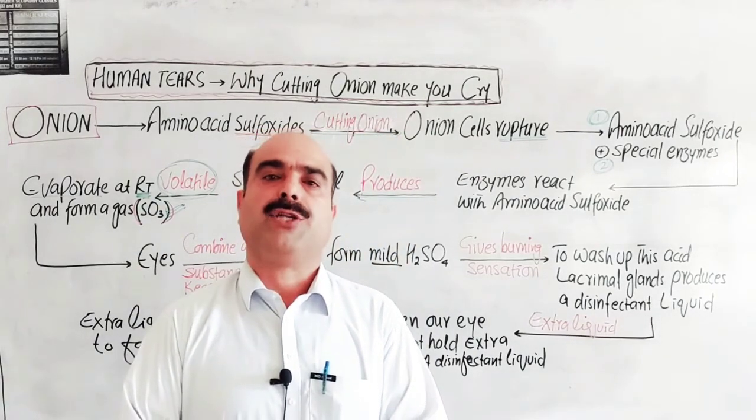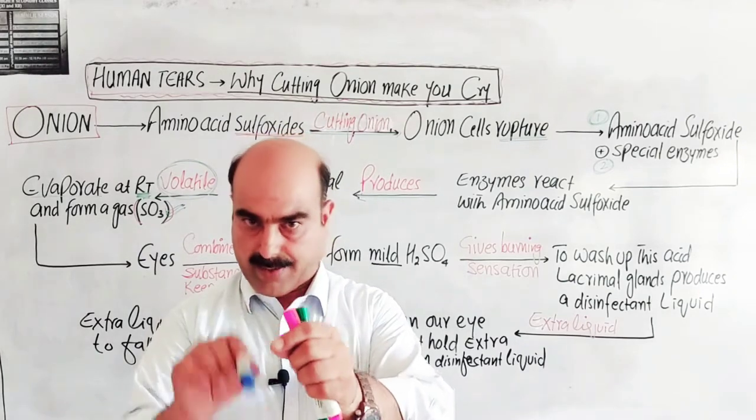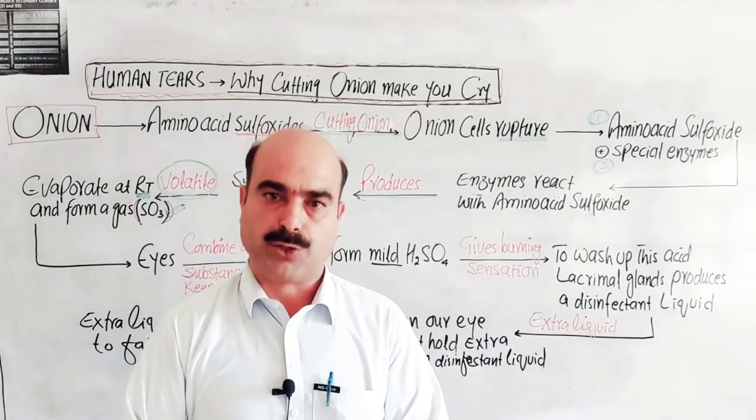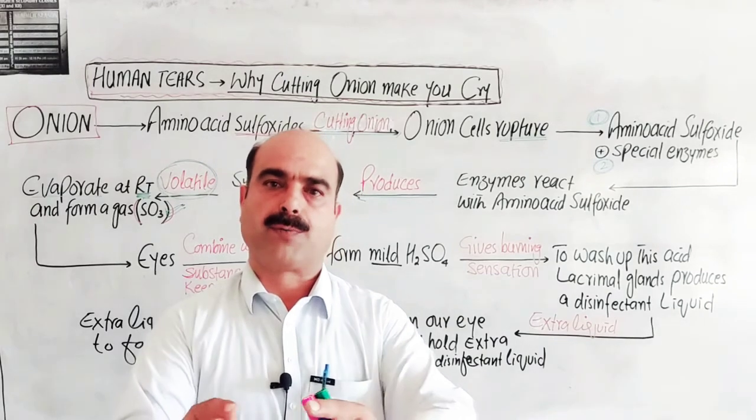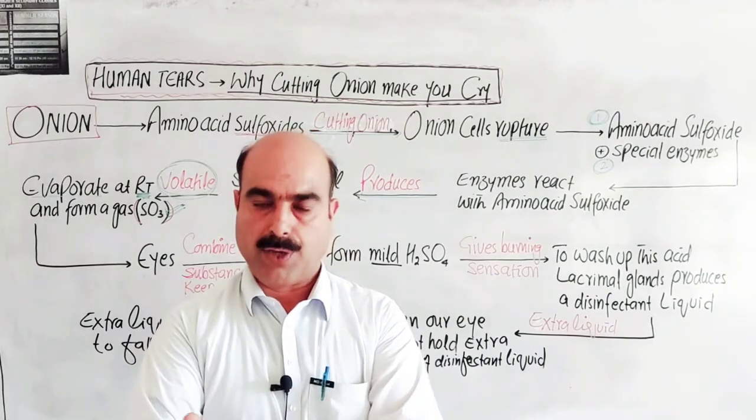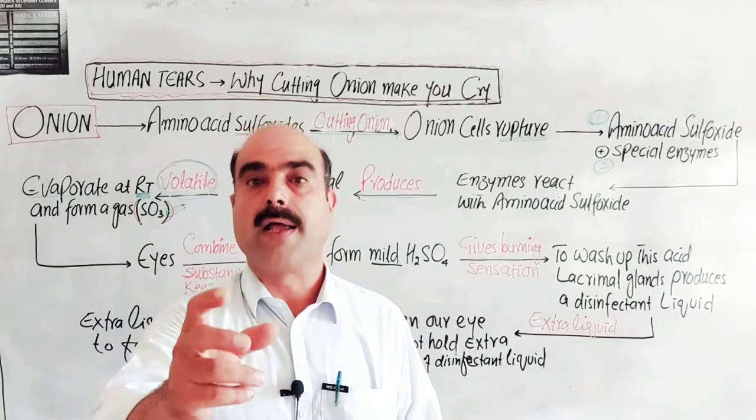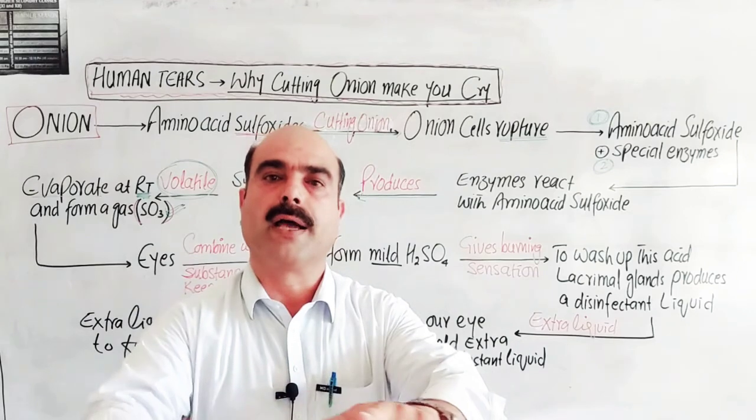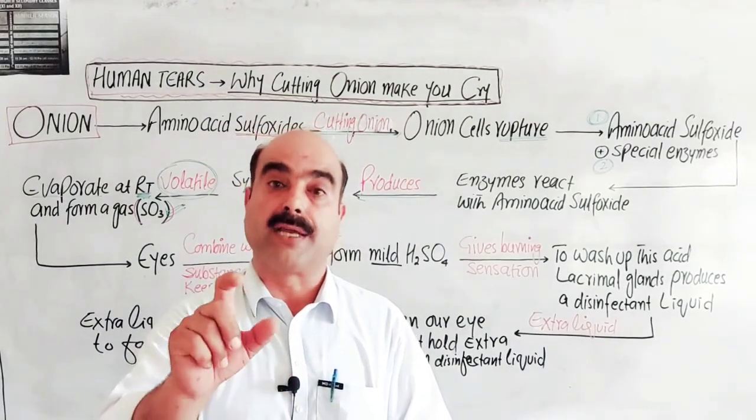The remedy for this is to cut raw onion in water. Cut onion in a bowl of water. The bubbles you see are the gases. Those gases go into the water instead of the human eye when you cut in water. This way the gases dissolve in water.